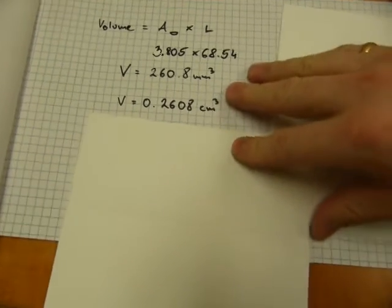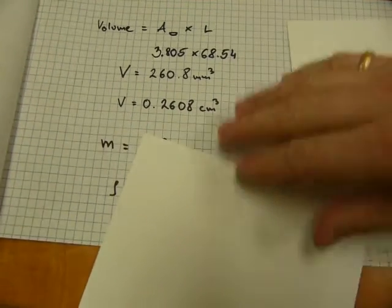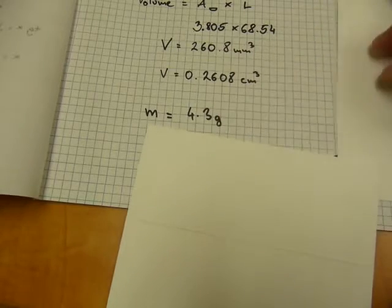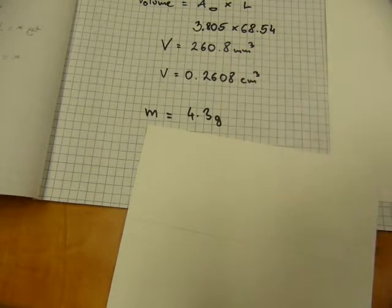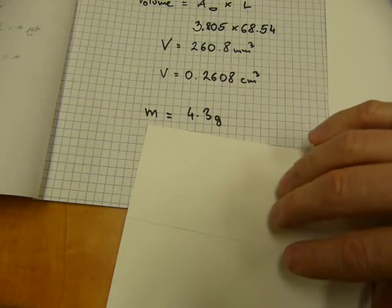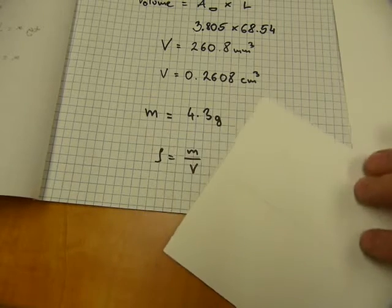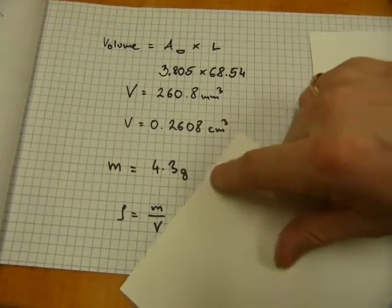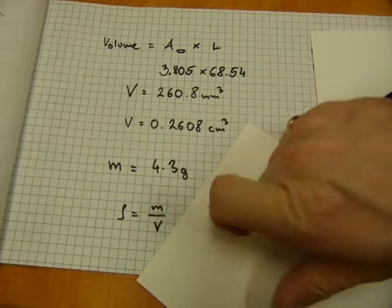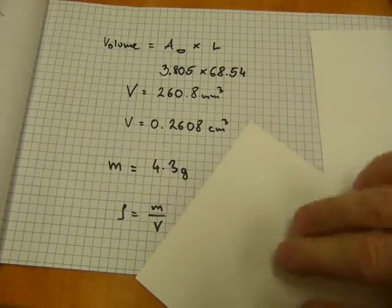And if I put it on the scale which I also have, its mass is that number, 4.3 grams. Now the stamp says on it that it's 14 carat gold and the density is calculated from this mass and volume. Density, that's Greek rho, mass over volume.